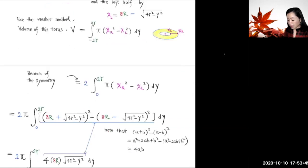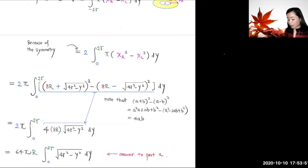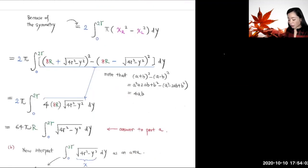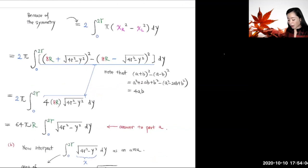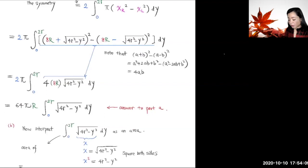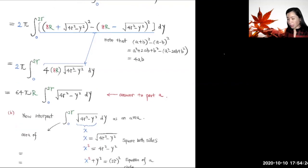x_R is equal to this, x_L is equal to this. Think about this as (a + b)² and this is (a - b)². When you combine them, you end up with 4ab. So this turns out to be 4 × 8r × √(4r² - y²). 4 × 8r is a constant multiple of this function. So we can bring it in front of this integral to multiply by 2π. That will be 64πr times this integral. This is the answer to part a.